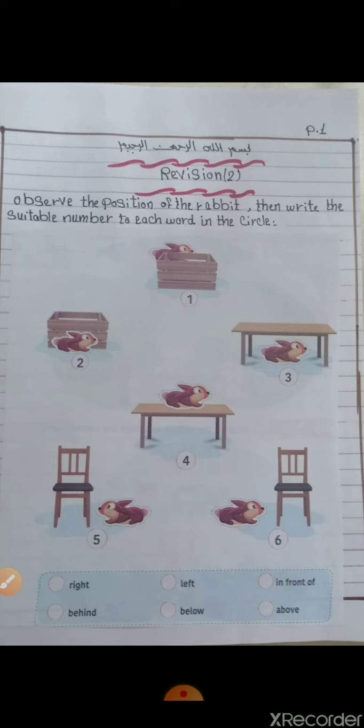Picture number two, where is the rabbit? Excellent, the rabbit is in front of the box. So here at in front of, we write number two.